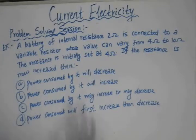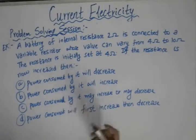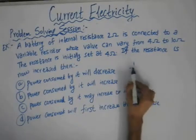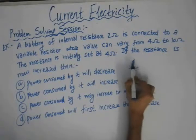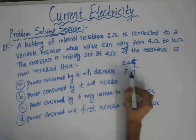This problem can be solved very easily if we draw the circuit diagram for the circuit. We know that there is some EMF — we have been given an EMF with some internal resistance. The value of that internal resistance given to us is 2 ohm.